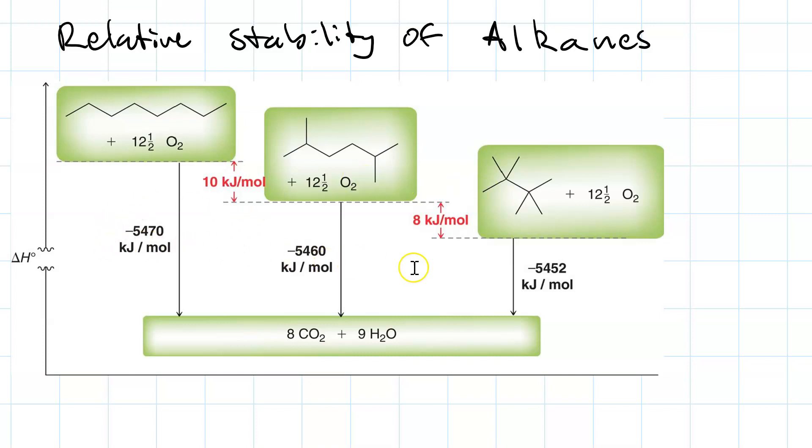These are the standard molar enthalpies of combustion. When you burn the straight chain compound, you get 5,470 kilojoules per mole. Turning two of these terminal groups into methyl groups, branching it a little bit, takes away 10 kilojoules per mole. It makes the compound more stable.